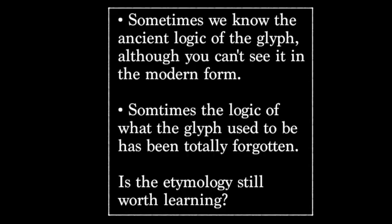Sometimes we know the ancient logic of the glyph, although you can't see it in the modern form. This is usually because of round after round of simplification and regeneration that has gone on in the Chinese language. Simplification isn't something that just happened once in the 20th century — the construction of what we call clerical script transformed many of the most common characters and character components. And sometimes the logic of what the glyph used to be has been totally forgotten.